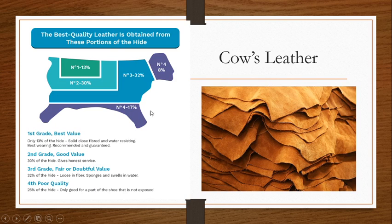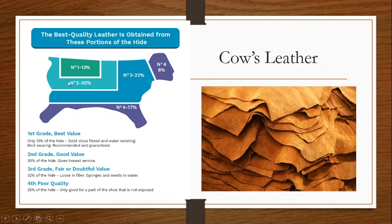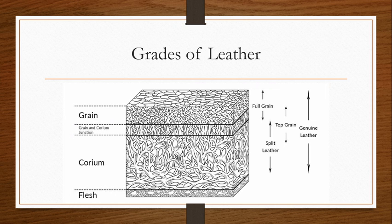This diagram shows the quality of leather and where the best qualities are produced on the hide. The best quality comes from the lower part of the back — about 13% of the hide. Moving outward, quality radiates out: 30% of the surrounding hide is second-grade leather, then the largest portion is third-grade, and from the legs and neck we get low-grade, poor-quality leather.